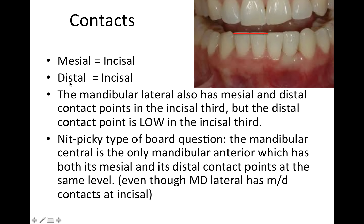Contacts: on the mesial we've got an incisal contact; on the distal we've got an incisal contact. The lateral also has contacts on the mesial and distal that are in the incisal, but the distal contact is low in the incisal third — so it's still the incisal third, but kind of lower in that incisal third.